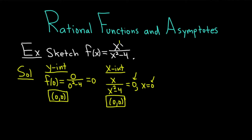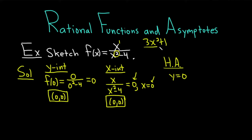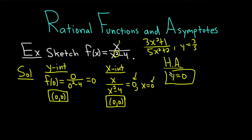In this particular problem, the degree in the numerator is 1 and in the denominator it's 2. Whenever the degree is bigger on the bottom, we have a horizontal asymptote, and it's always y equals 0. If instead, for example, it was 3x squared plus 1 over 5x squared plus 2, when the degrees match you would get an HA of 3 over 5 — the ratio of the leading coefficients. So if it's bigger on the bottom you get y equals 0; whenever they match you get the ratio. In this problem, we have y equals 0.